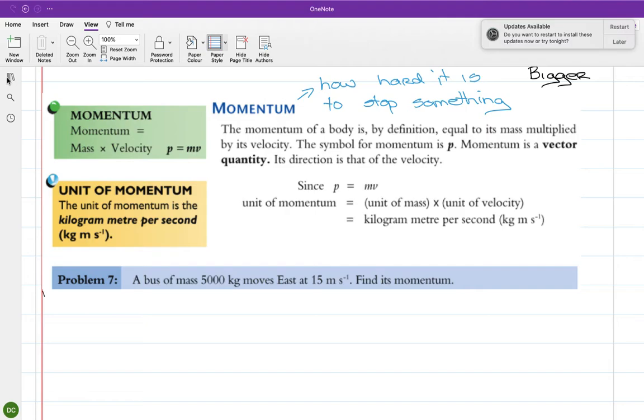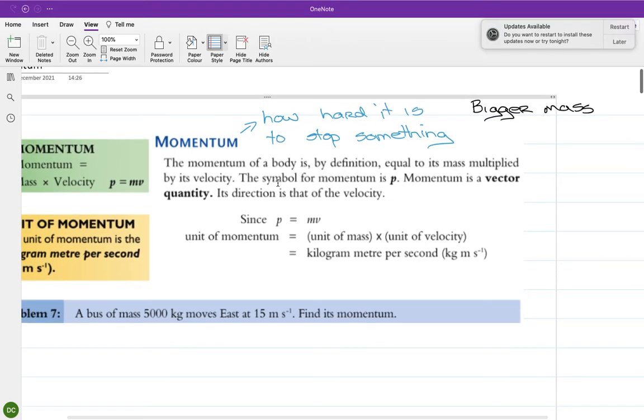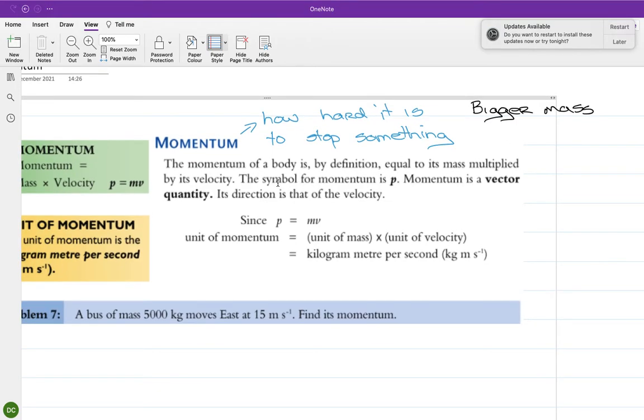That means if you were to put it on a scales, if you were to put the double-decker bus and the car on the scales, the double-decker bus would give a bigger reading. So mass is one thing. If you're particularly big that makes you particularly hard to stop.